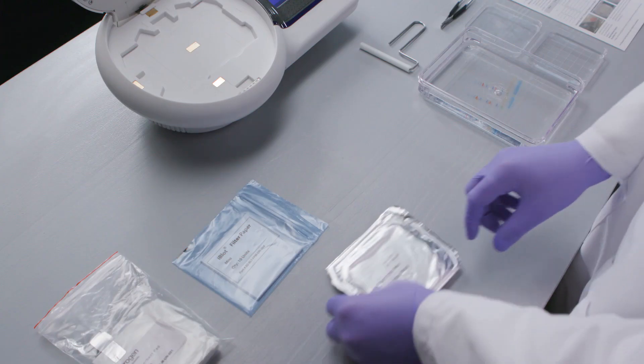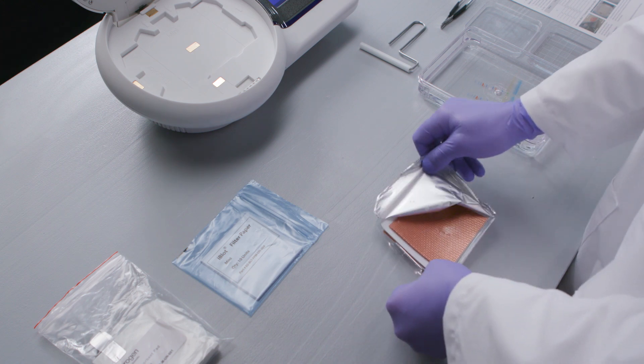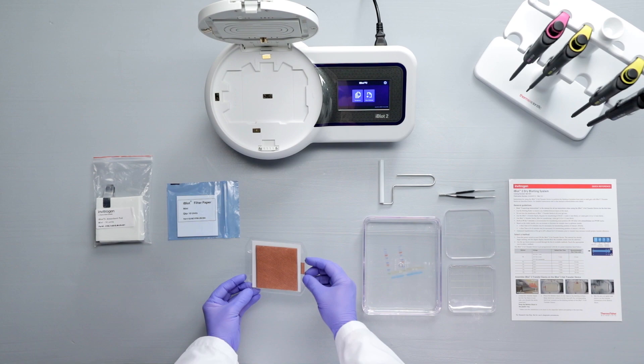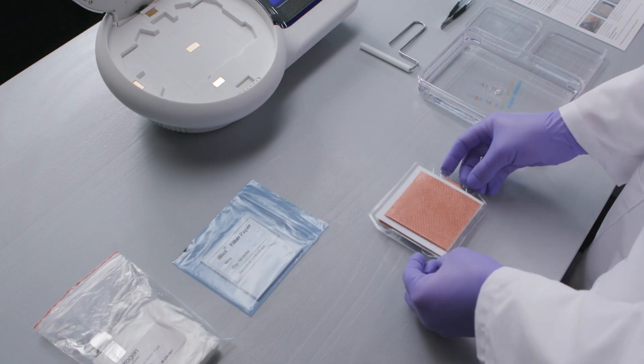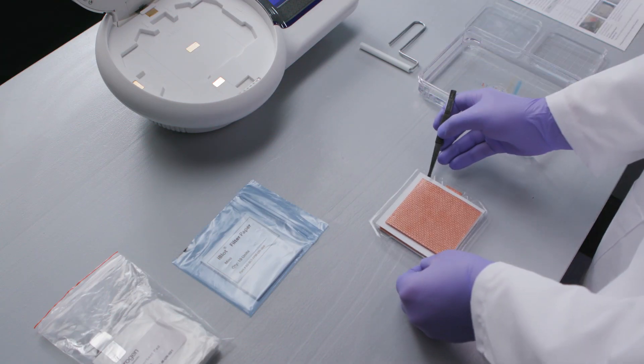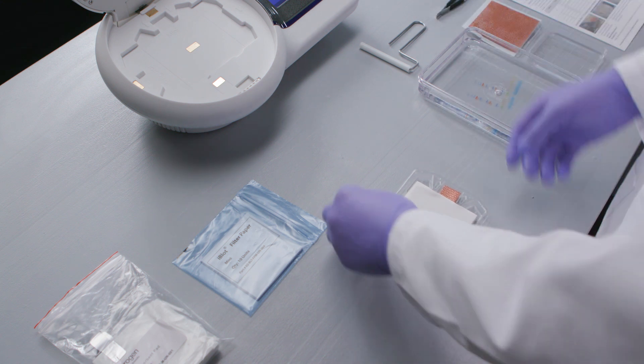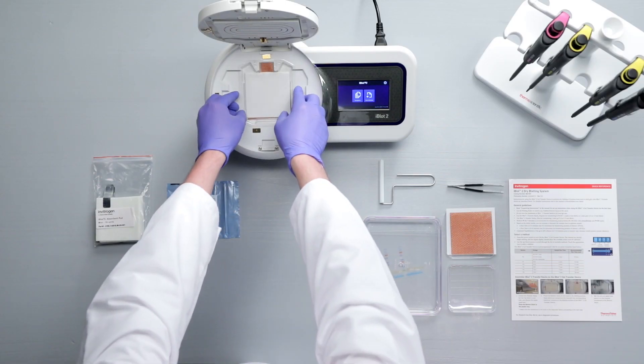Next, unseal the transfer stack. Notice that the top and bottom stacks are in the same tray. Separate the top stack and set it aside. Keep the bottom stack in the plastic tray. The bottom stack contains your PVDF or nitrocellulose membrane.